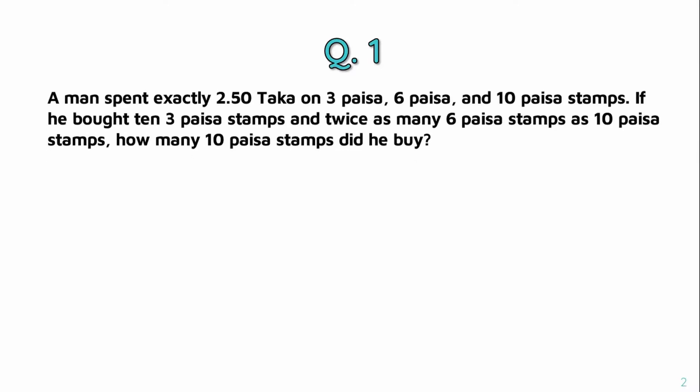The first question is: a man spent exactly 2.5 takar on 3-pausa, 6-pausa, and 10-pausa stamps. If he bought 10 three-pausa stamps and twice as many 6-pausa stamps as 10-pausa stamps, how many 10-pausa stamps did he buy?